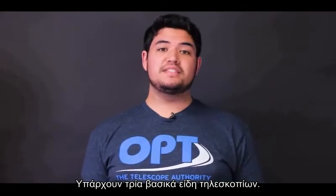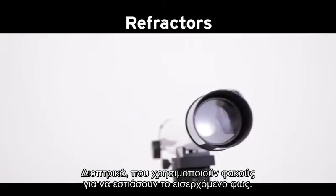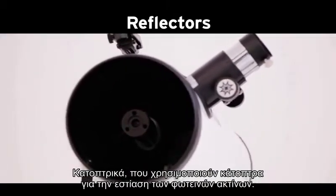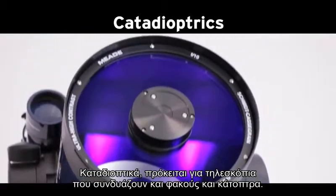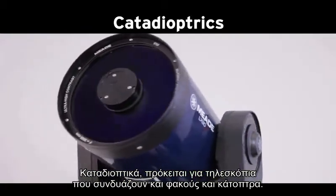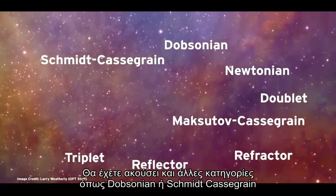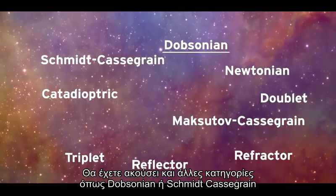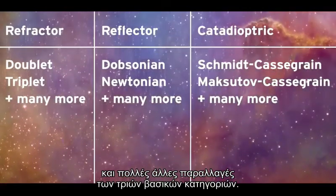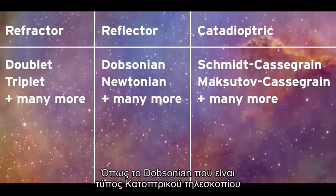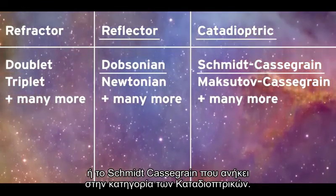There are three main types of telescopes available. Refractors, which use lenses to bend the light into focus. Reflectors, which use mirrors that reflect light into focus. And catadioptric, or compound scopes, which use a combination of both lenses and mirrors. While you might hear other specific terms for telescope types mentioned, such as Dobsonian or Schmidt-Cassegrain, most of these other types are actually variants of the basic three — such as a Dobsonian being a type of reflector, or a Schmidt-Cassegrain being a type of catadioptric.